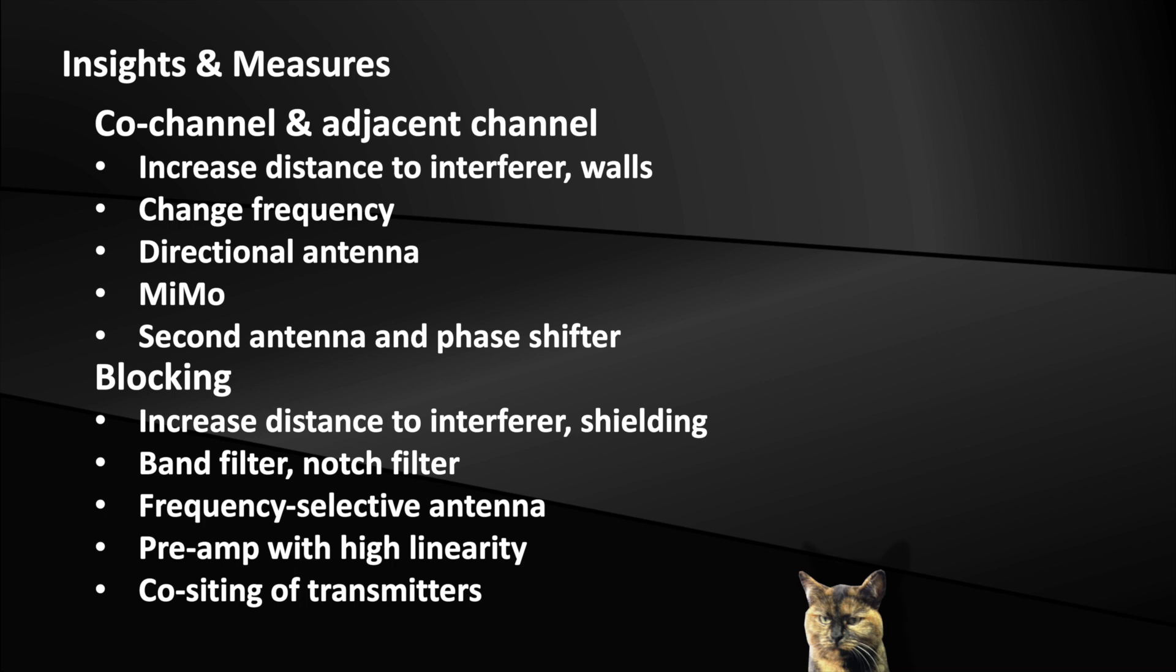Changing the frequency channel within the same band can improve channel interference but not blocking. A directional antenna can significantly improve the SNR. However, in case of blocking, it can be only effective when there is no near-field coupling.